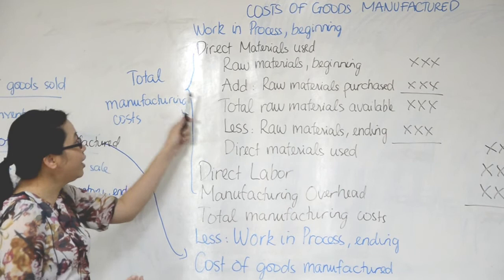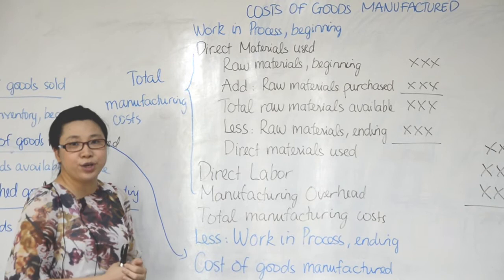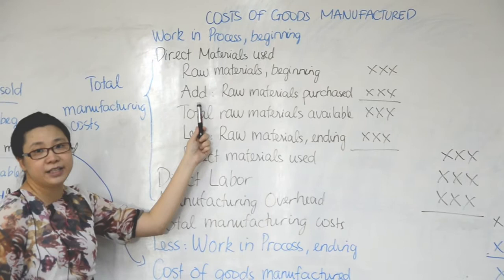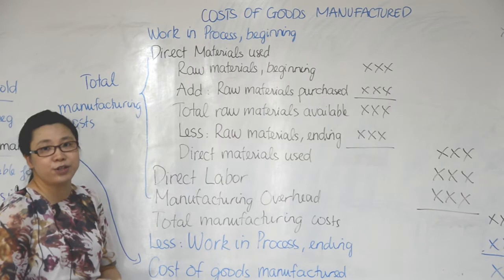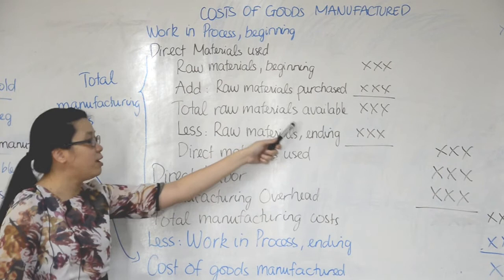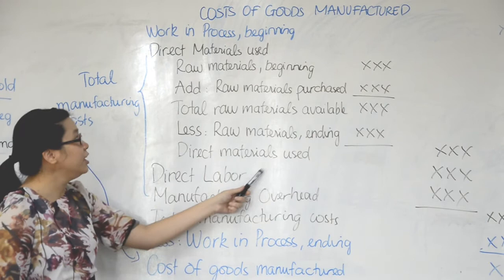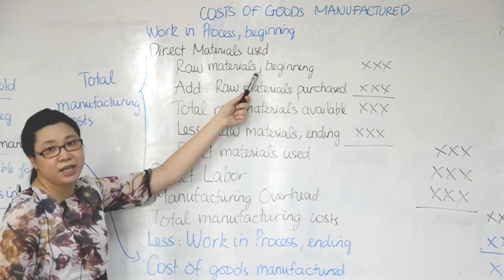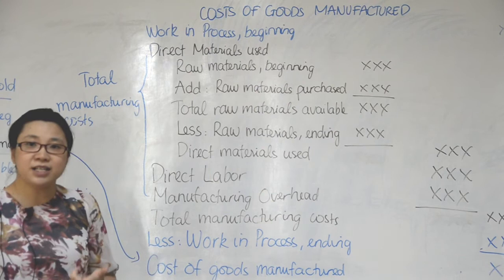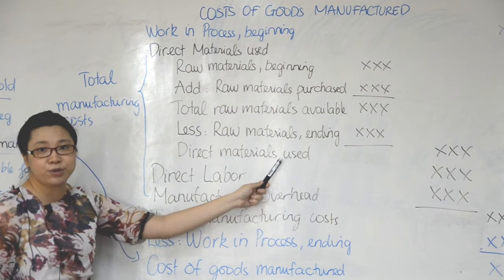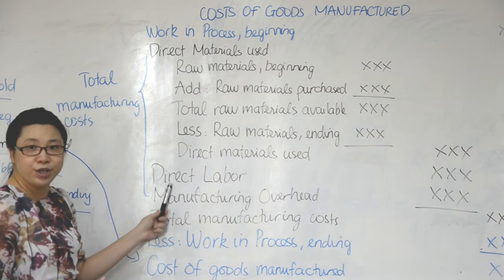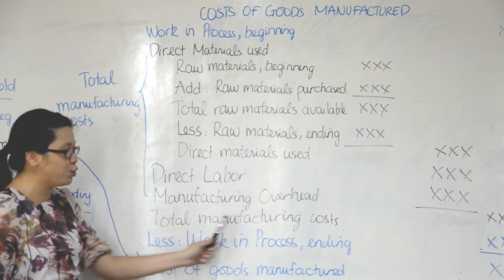How can we find direct material used? We take raw material at the beginning, plus raw material purchased during the period — that gives you total raw material available. Then minus raw material at the end, and that gives you the raw material used. Then we add the direct labor cost and the manufacturing overhead, and that gives us total manufacturing cost.